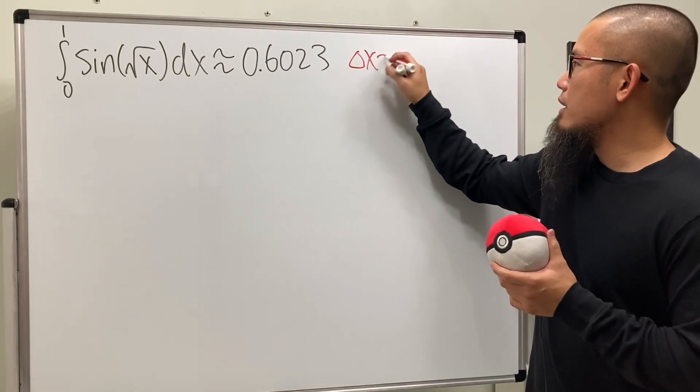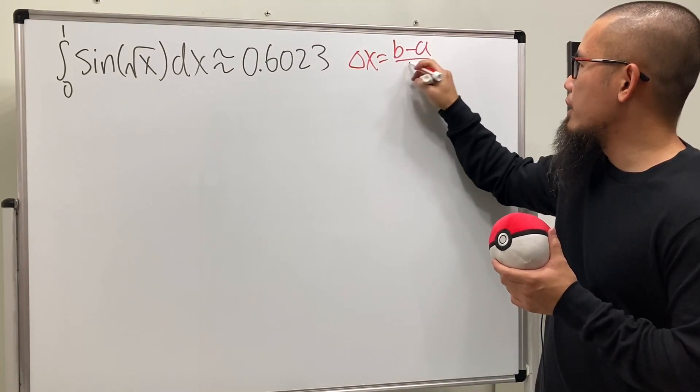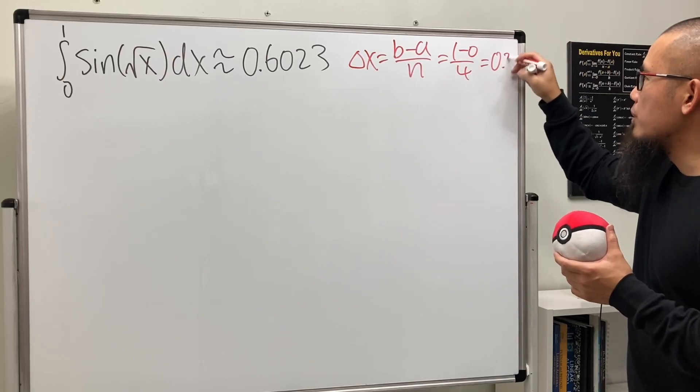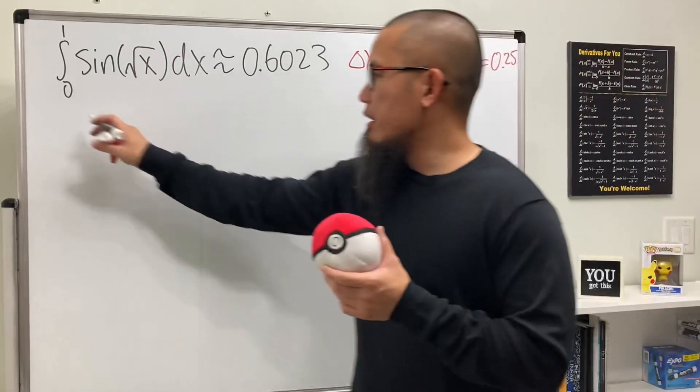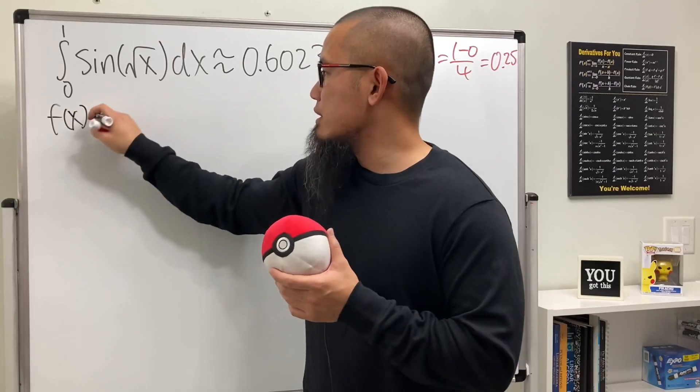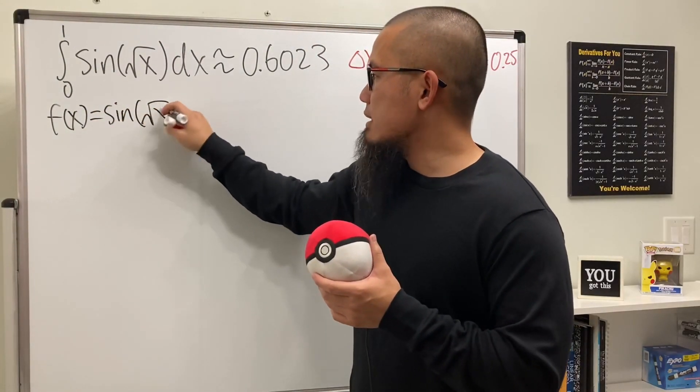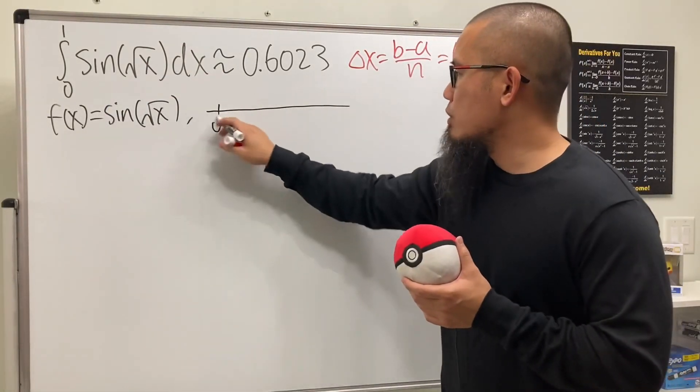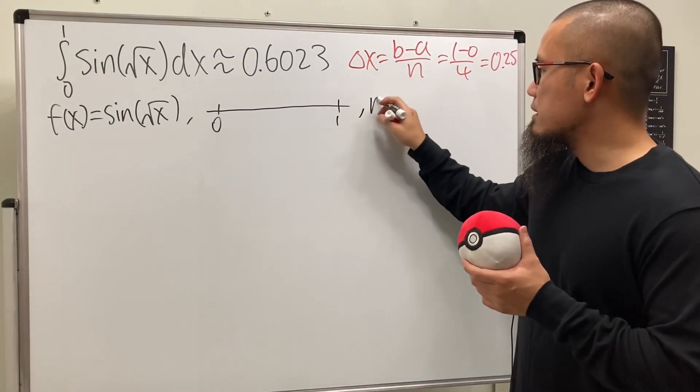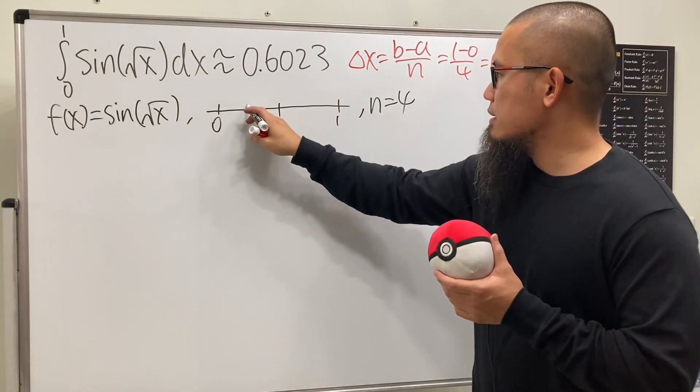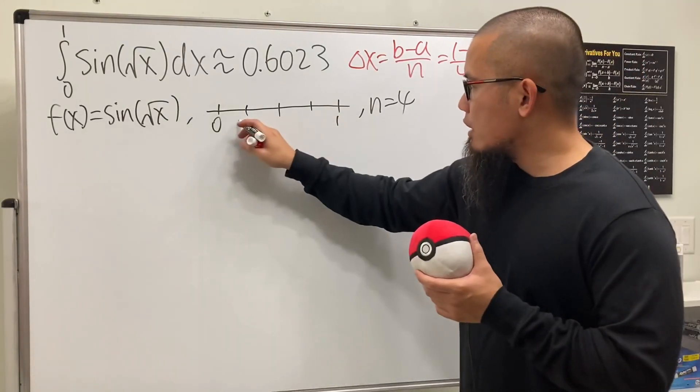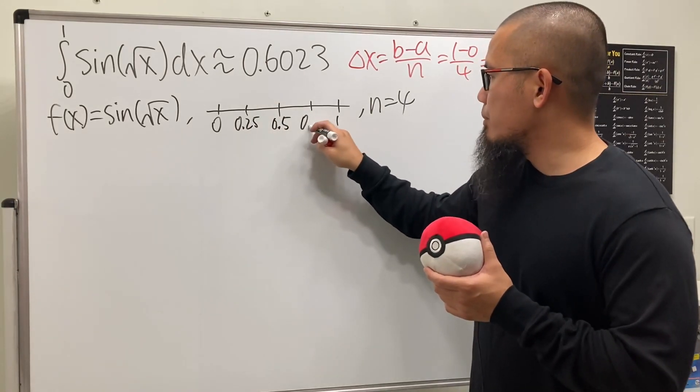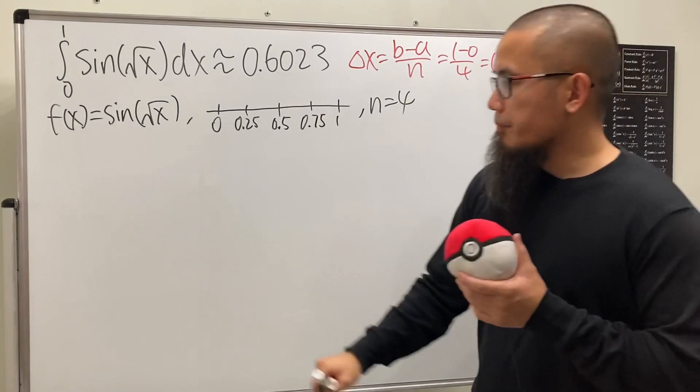Let's do delta x first. Of course, b minus a over n. b is 1, a is 0, and n is 4, so we have 0.25. Here is our function, which is sine of square root of x. Let's draw the number line going from 0 to 1. Cut this into 4 pieces because n equals 4. This is 0.25, then 0.5, then 0.75.